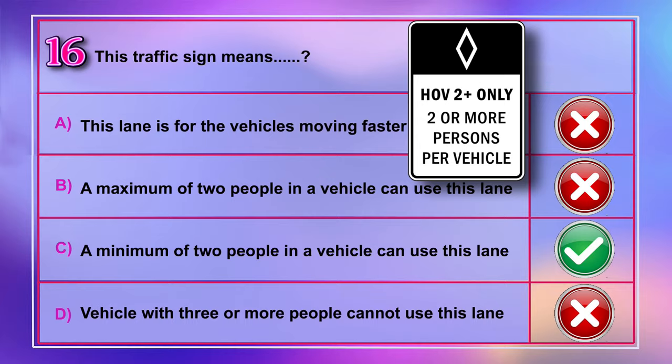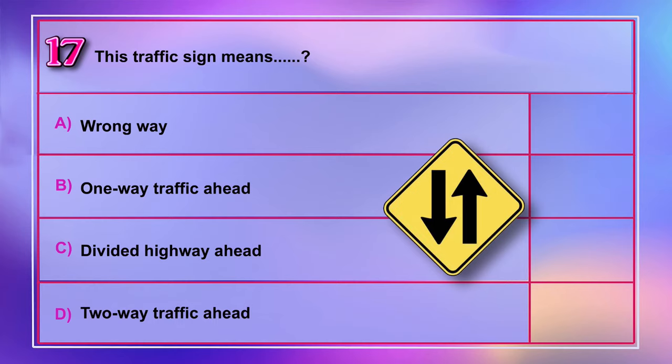Question number 17: This traffic sign means A) wrong way, B) one-way traffic ahead, C) divided highway ahead, D) two-way traffic ahead.